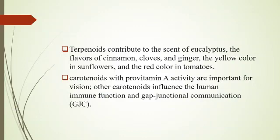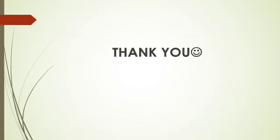For humans, carotenoids play an important role in health. Carotenoids with pro-vitamin A activity are important for vision. Other carotenoids influence human immune function and gap junctional communication. Thank you so much.